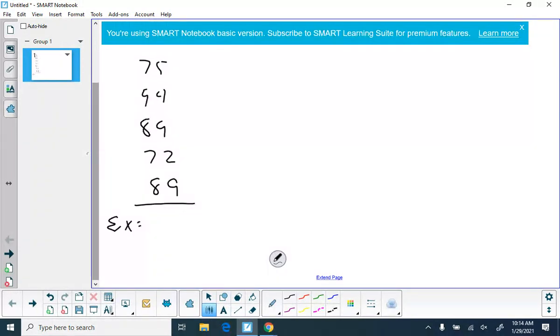So we can add up all of our X values, add down the column. What are you getting? 504. Okay, 504.